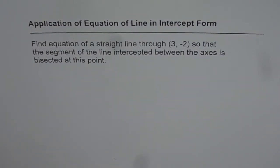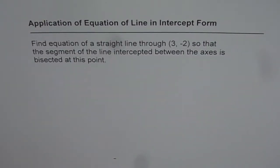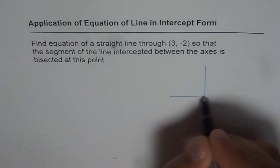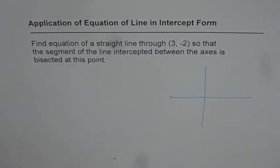Application of equation of line in intercept form. Find equation of a straight line through the point (3, -2) so that the segment of the line intercepted between the axes is bisected at this point. Let's try to understand this question first and then we will find the equation of line. It is always good to draw, visualize and then solve.